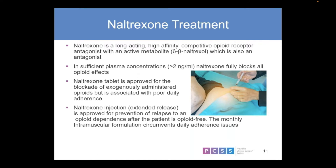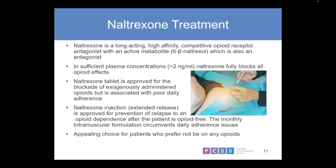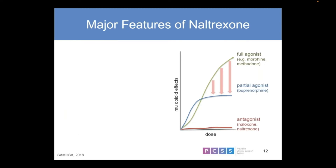The introduction of injectable naltrexone for the treatment of opiate use disorder has had better efficacy because we can give the monthly injection, and during that period patients remain blocked from using any full opiate agonist. This can be an appealing choice to patients who don't want to be on any form of opioid any longer, even though the stimulation of opioid feelings is dramatically different with methadone and particularly buprenorphine. They just know they're completely blocked from the use of any other opioid.